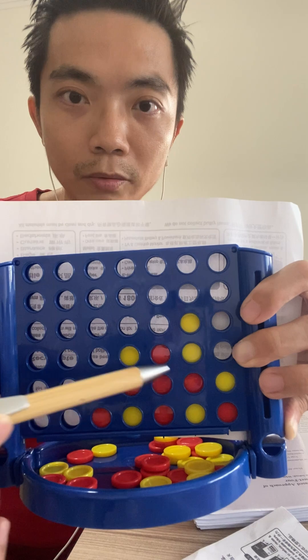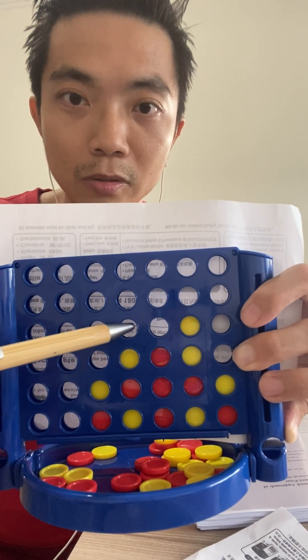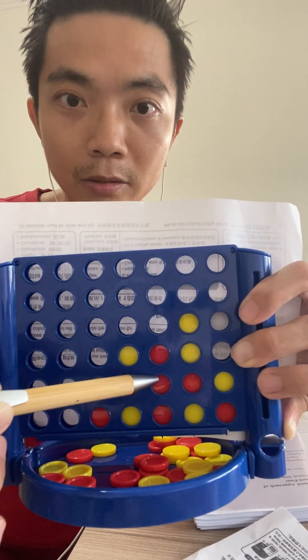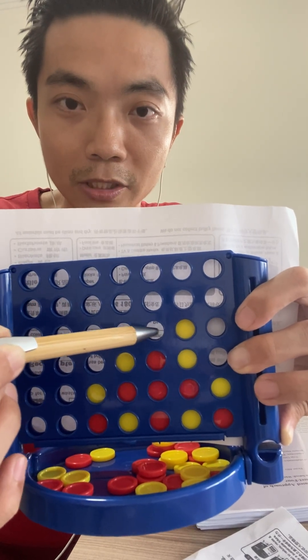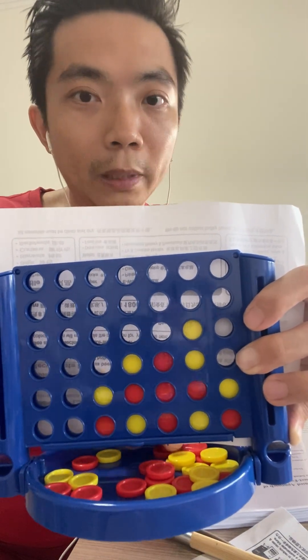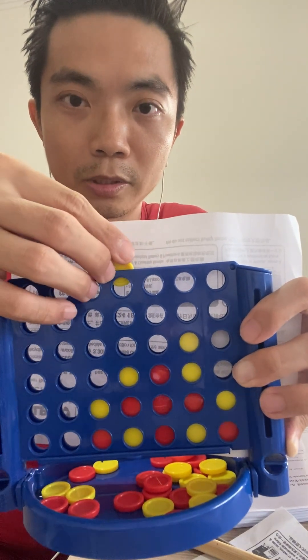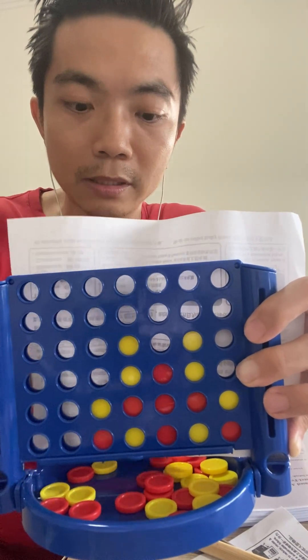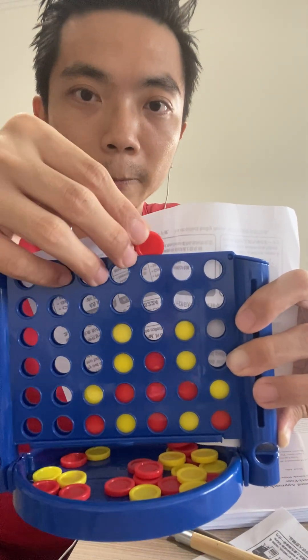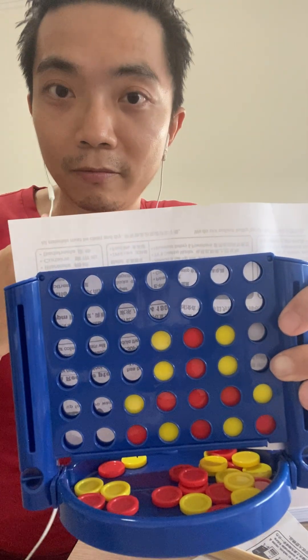So as you can see, one two three, major threat which is also a winning check here. One two three, winning check here. Yellow player has no choice but to block either one of them, which still creates a win for the red player over here. Have we solved it? Have we solved it? Well, thank you.